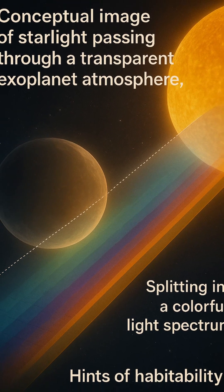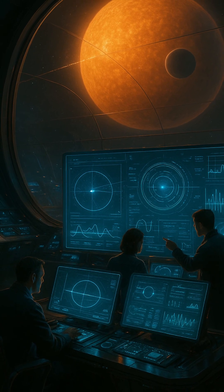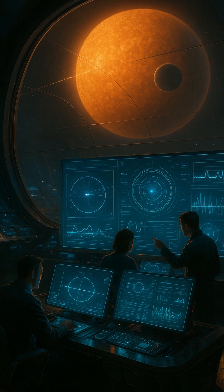As the planet's atmosphere leaves behind a kind of spectral fingerprint, molecules within the atmosphere absorb certain wavelengths of light, creating dark lines in the spectrum.